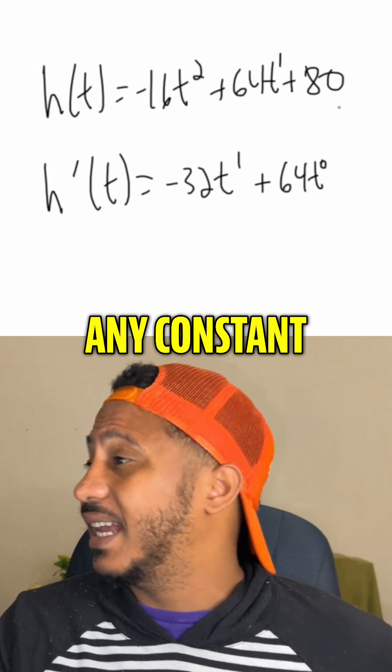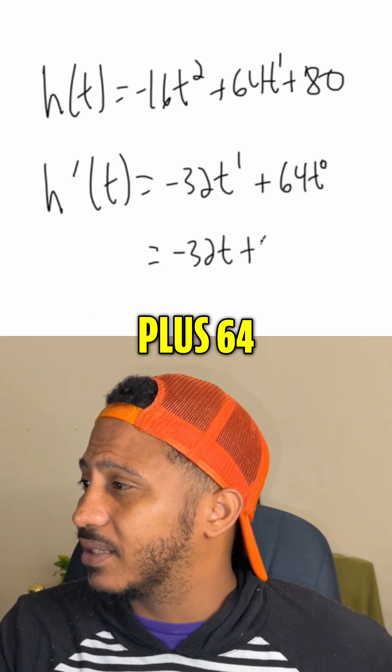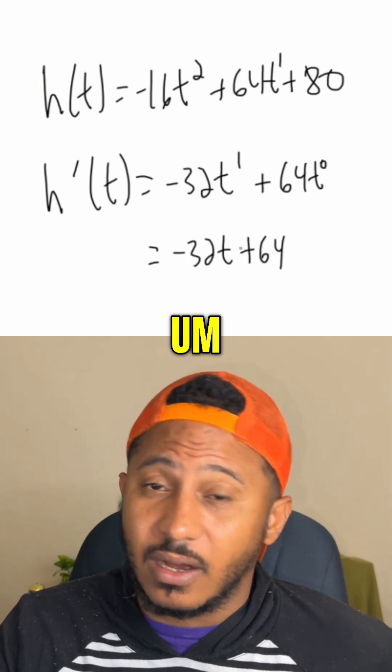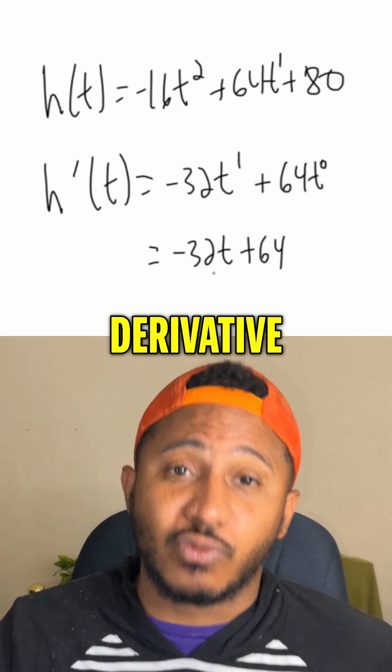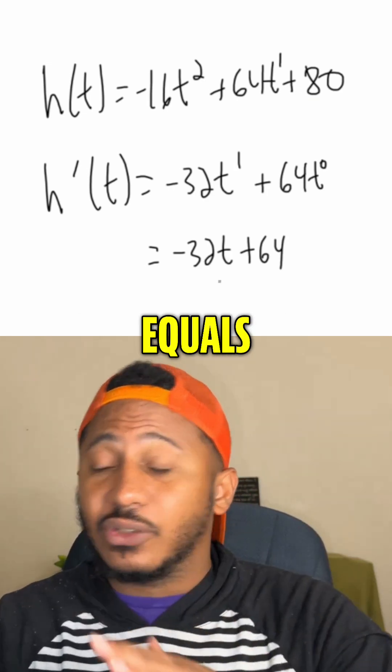And the derivative of any constant is just 0. And so this simplifies to just -32t + 64 because t to the 0 is 1. And so that becomes our derivative. And then it says, now,